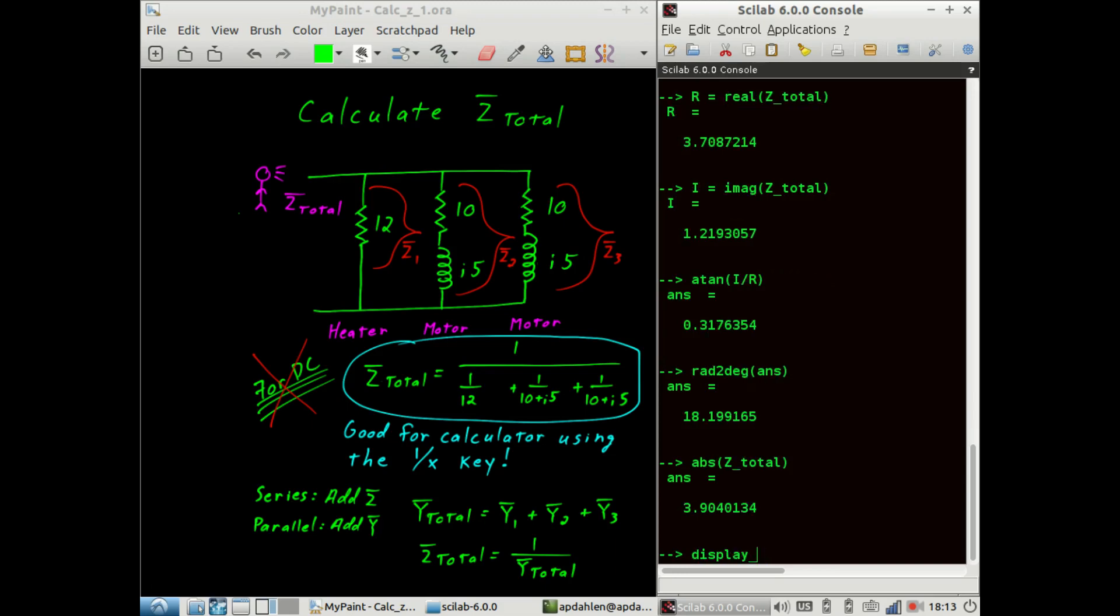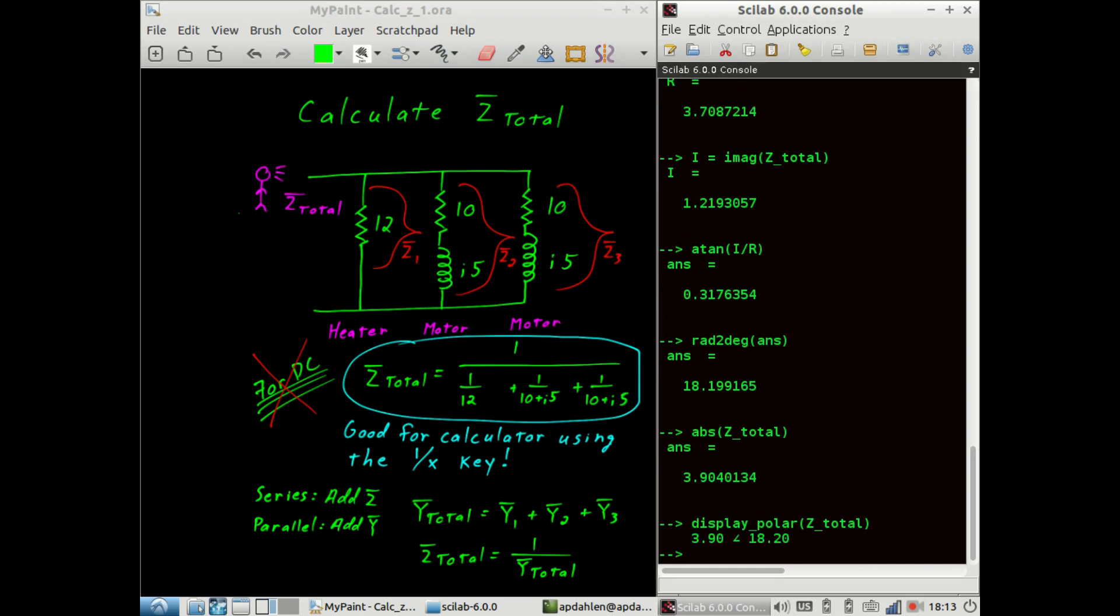That's a lot of work, so I've made a function that makes this easier for us to do. We can just type display polar, and then enter Ztotal as a parameter, and it tells you 3.9 at an angle of 18.2 ohms.